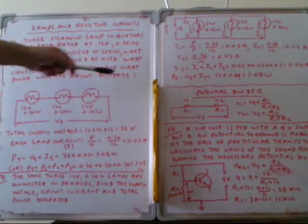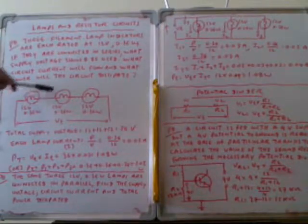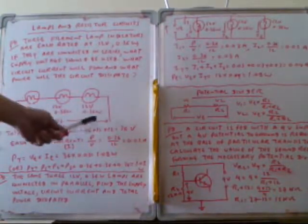These are three identical lamps, 12V, 0.36W each, connected in series to a supply voltage. The total supply voltage can be calculated as the sum of voltages across each lamp: 12V + 12V + 12V = 36V.